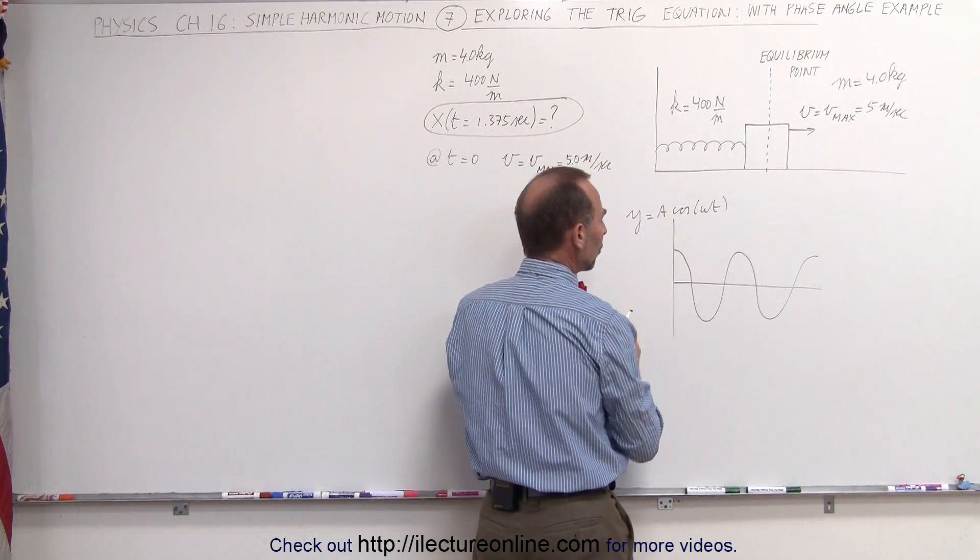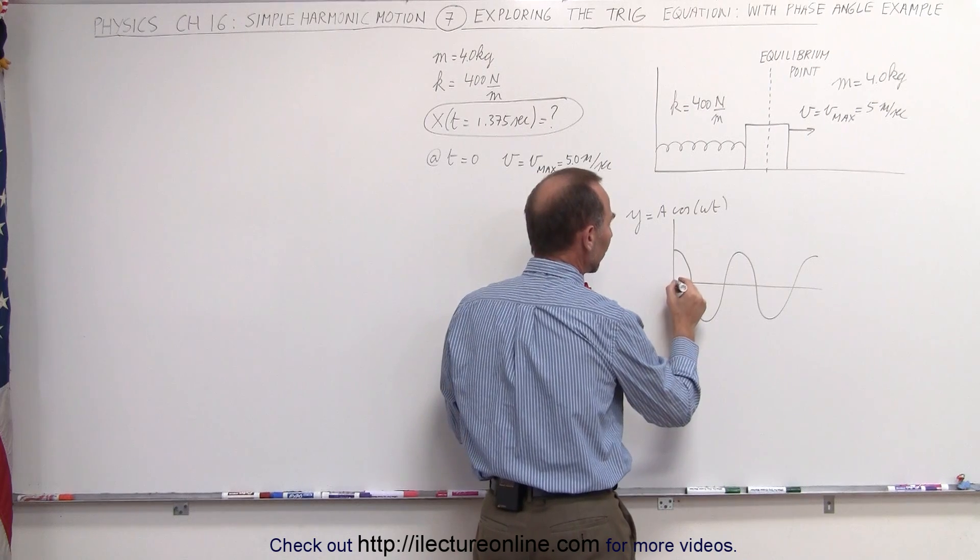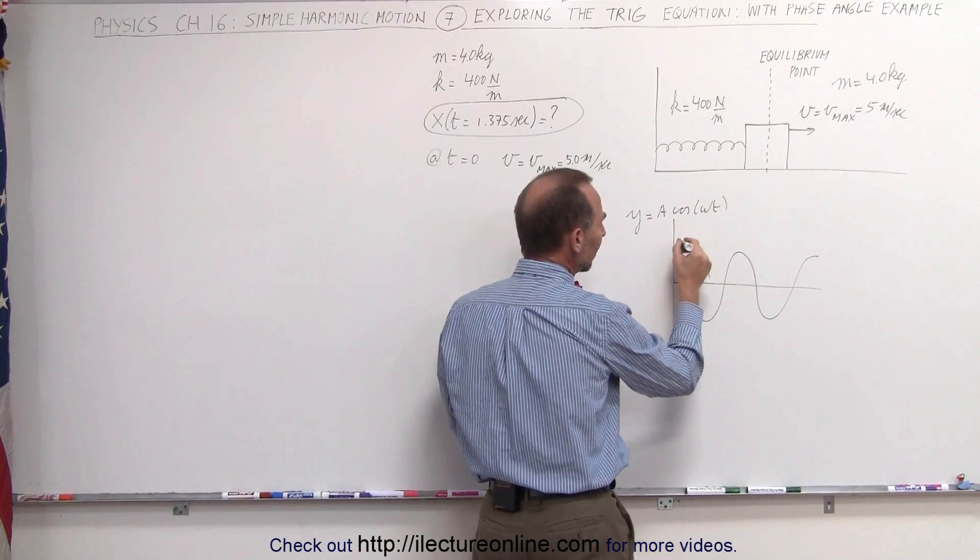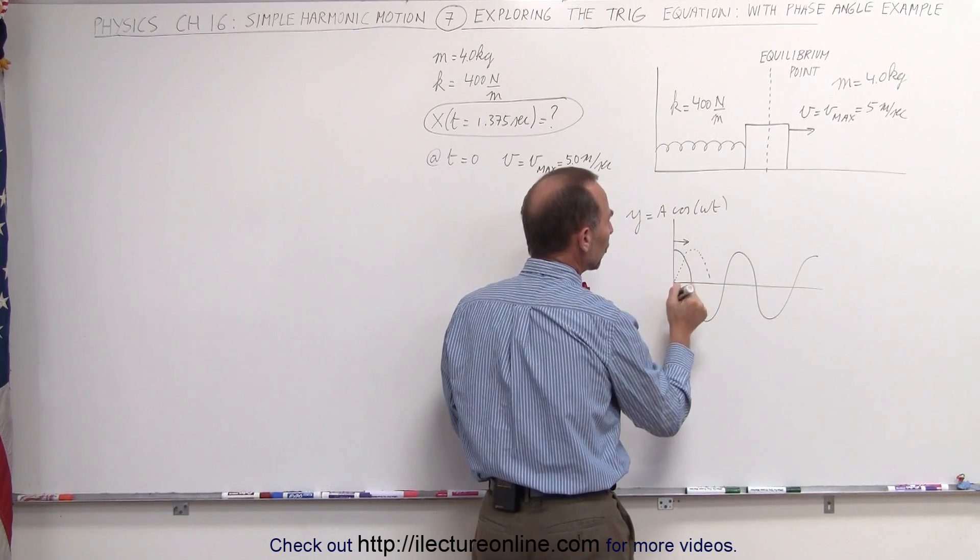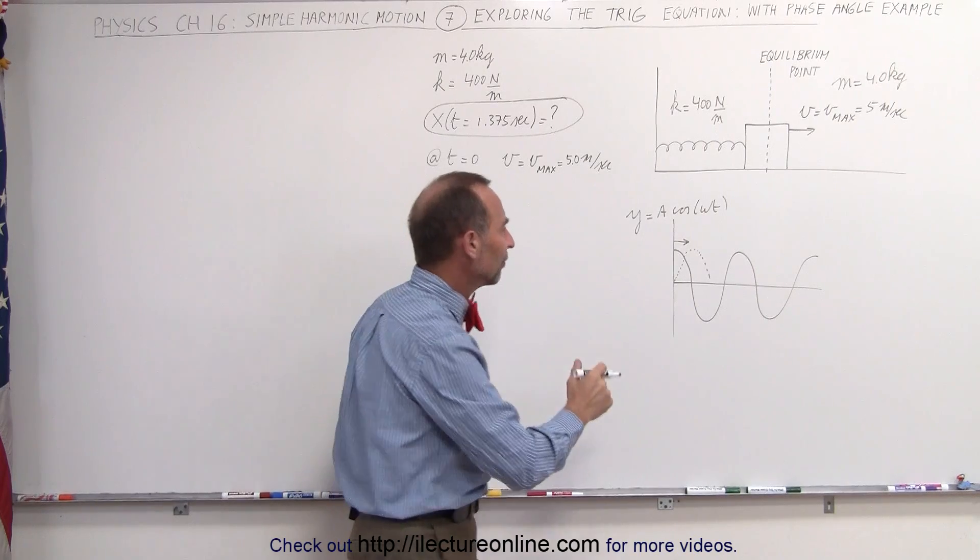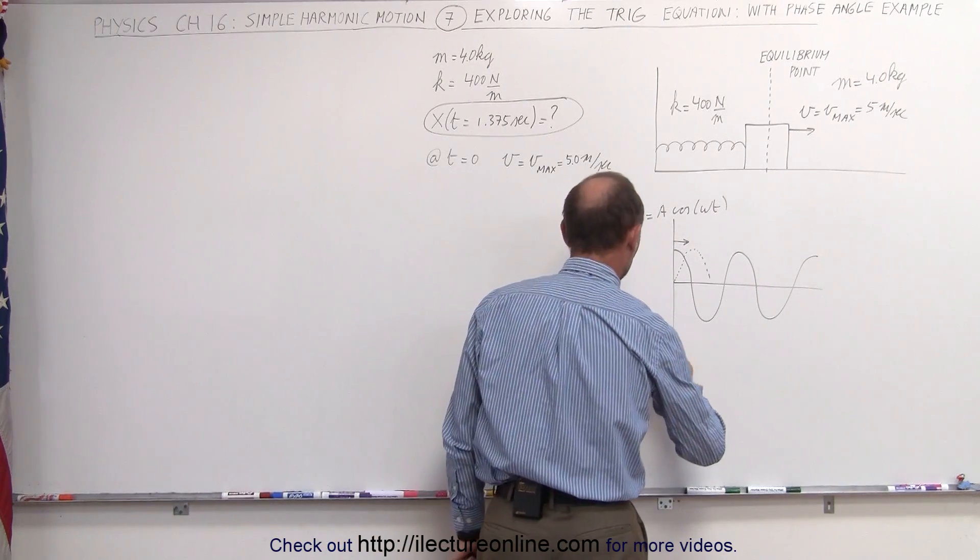But we want the equation in such a way that we actually start at the zero point, like this, which means that the equation must be shifted to the right one quarter of a cycle, which means we need a phase shift equal to minus pi over two.